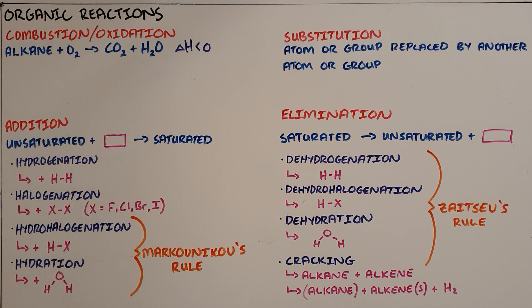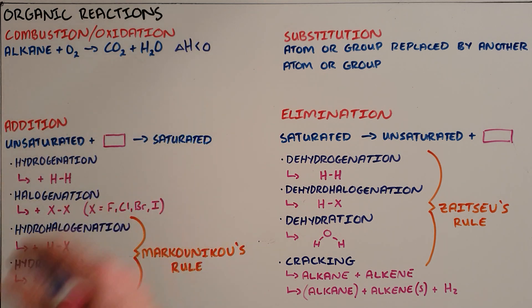The first of which is the combustion or oxidation reaction, in which any alkane combusts with oxygen to form carbon dioxide and water in an exothermic reaction, meaning a reaction that gives off heat. This is the reaction that we use in burning most fossil fuels.